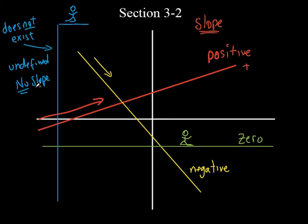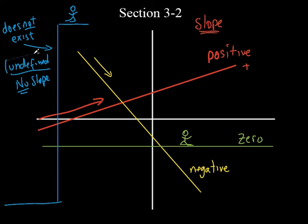We'll talk more specifically about this a little bit. But let's say I actually did go down this — if it was really, really tall, guess what would be left of me at the bottom? Nothing. They wouldn't be able to identify my remains. I would be undefined. So think of that when you think of what zero slope is as opposed to a vertical line.